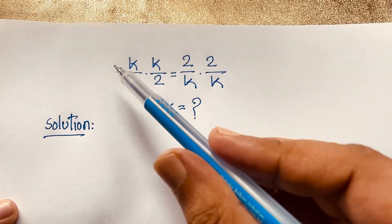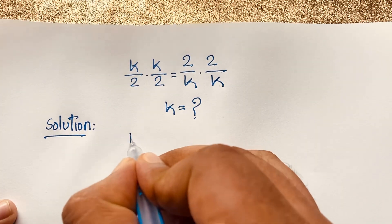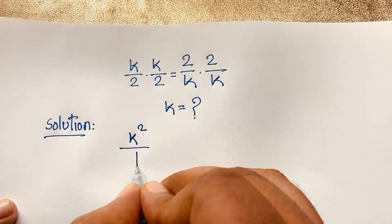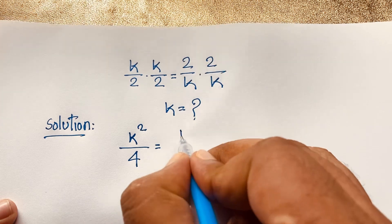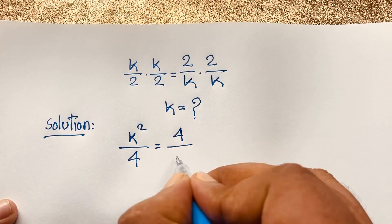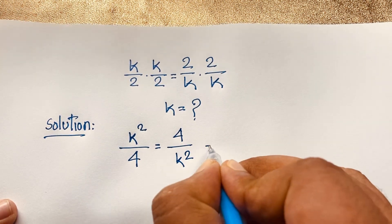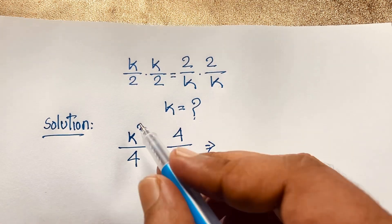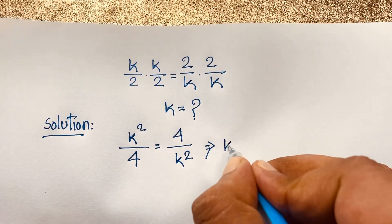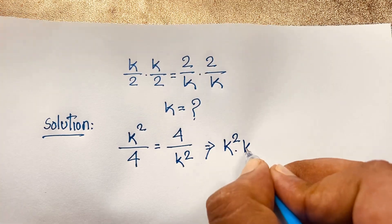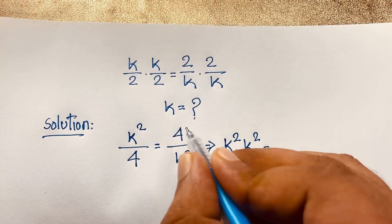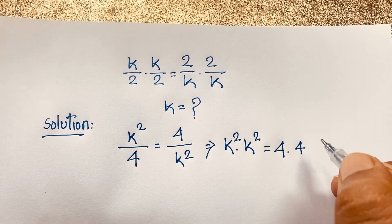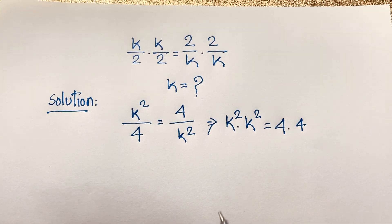Here k times k gives k squared, and 2 times 2 gives 4 on the left side. On the right side, 2 times 2 is 4 and k times k is k squared. Now we have k squared times k squared, which is k to the power of 2 times k to the power of 2, and 4 times 4 on the other side.